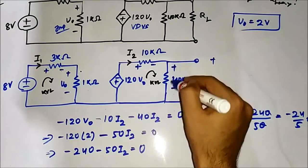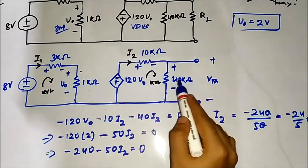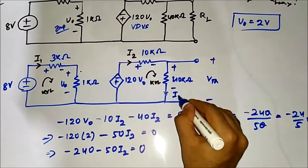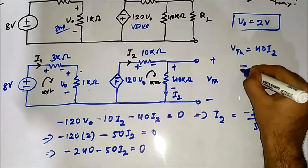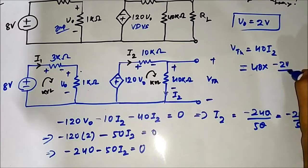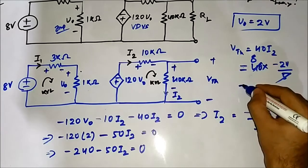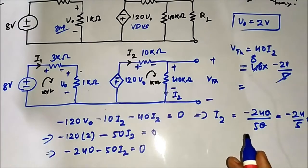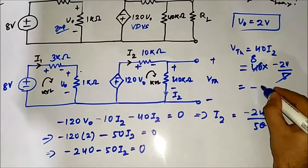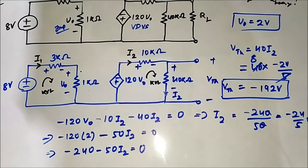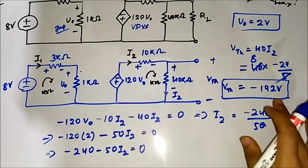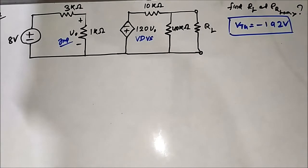The Thevenin voltage is the voltage drop across the 40kΩ resistor, through which the same current i2 flows. So Vth equals 40 × i2, which equals 40 × (minus 24/5) equals minus 24 × 8, which equals minus 192 volts. Therefore, Vth equals minus 192 volts.